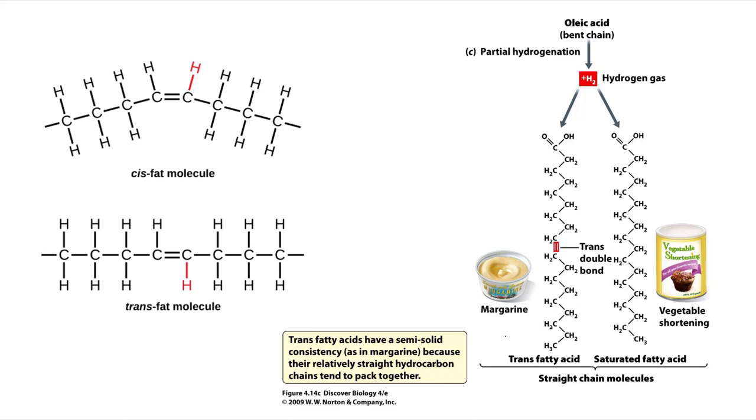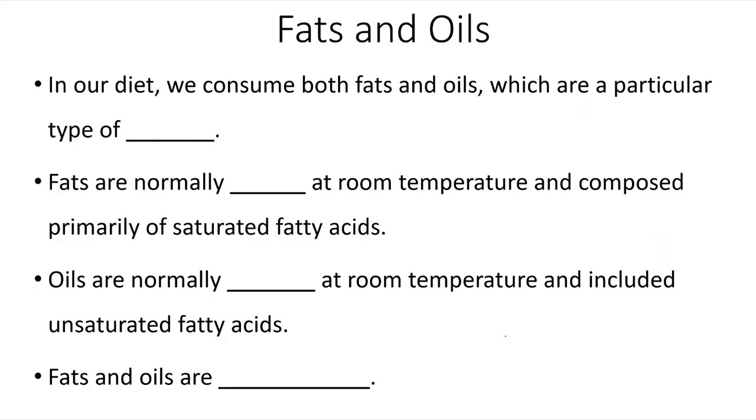Now, if that hydrogenation process continues, we can actually convert that unsaturated fat into a fully saturated fat. That's how we get vegetable shortening or Crisco. In our diet, we consume both fats and oils, which are a particular type of lipid.